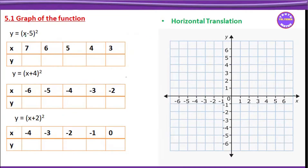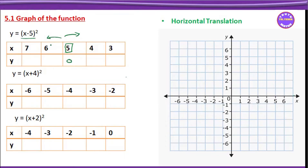Here we have x equal to 0. This is plus 5 beta; plus 5 theta is equal to 6, 7, and 4 is equal to 3. You can see y is equal to x minus 5, the whole square.